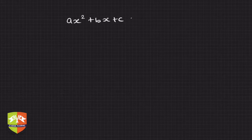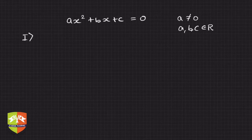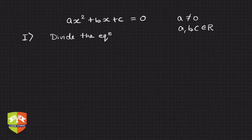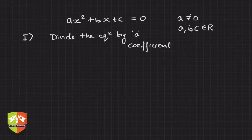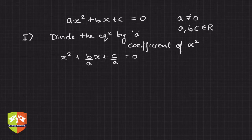Let's see how we do it. The quadratic equation is of the form ax² + bx + c = 0, where a ≠ 0 and a, b, c are real numbers. Step one: divide the entire equation by a — the coefficient of x². You will get x² + (b/a)x + (c/a) = 0.